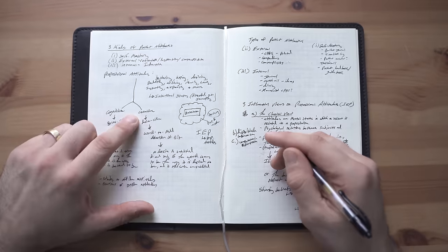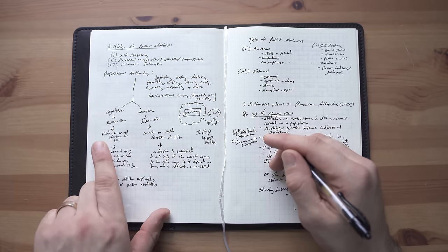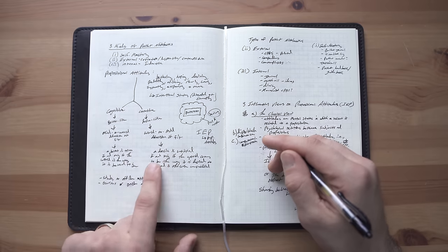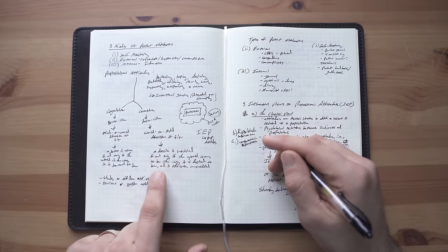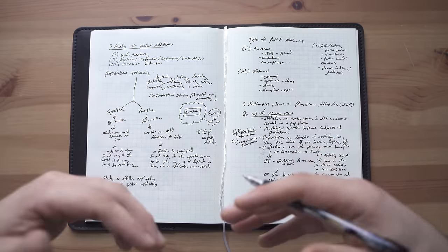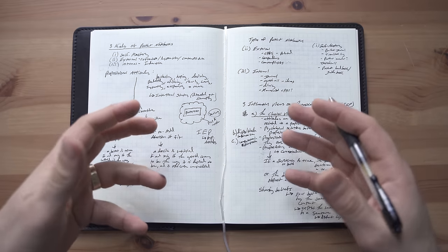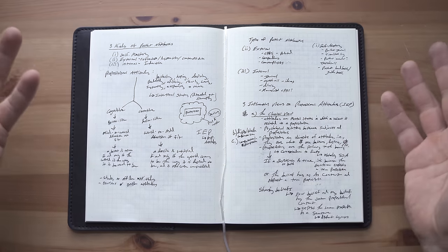Now, conative propositional attitudes, which are desire-like, this is a world-to-mind direction of fit instead of a mind-to-world direction of fit. A desire is satisfied if and only if the world comes to be the way it is desired to be and is otherwise unsatisfied. So a desire is fulfilled if the world changes to match that desire. And a belief is true if it ends up matching the way the world already is.